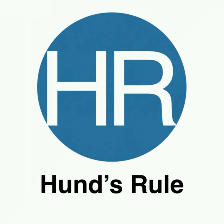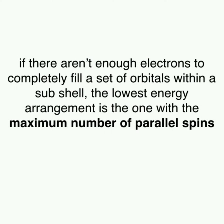In this lesson, we'll discuss Hund's rule. This is the third rule used in determining how electrons distribute themselves in multi-electron atoms. Hund's rule tells us that if there aren't enough electrons to completely fill a subshell, then the electrons will arrange themselves to have the maximum number of parallel spins.